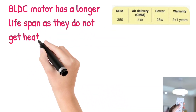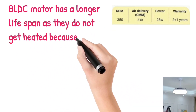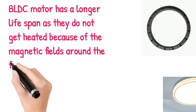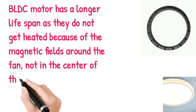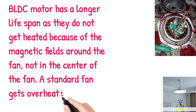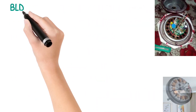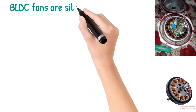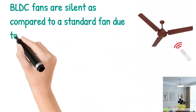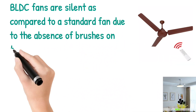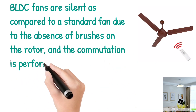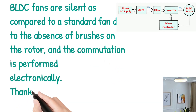BLDC motors have a longer lifespan as they do not get heated, because the magnetic fields are around the fan, not in the center. A standard fan gets overheated by comparison. BLDC fans are also silent compared to a standard fan, due to the absence of brushes on the rotor and because commutation is performed electronically.